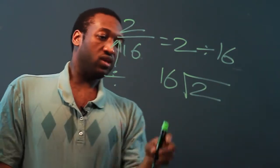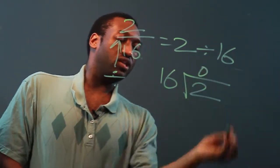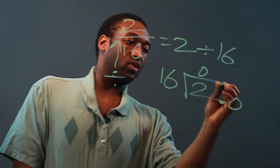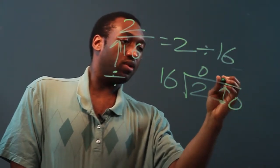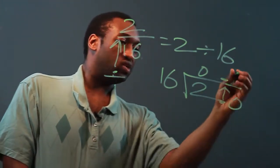Sixteenth into 2. Sixteenth does not go into 2. That's zero. Let's add a decimal and a zero and bring the decimal up. Sixteenth into 20 is 1.